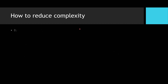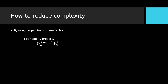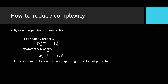To reduce complexity, we need to exploit the properties of the phase factor. The first is the periodic property: W_N^(K+N) equals W_N^K. The second is the symmetric property: W_N^(K+N/2) equals minus W_N^K. In direct computation, these properties of the phase factor are not used at all, whereas FFT algorithms exploit these properties extensively.